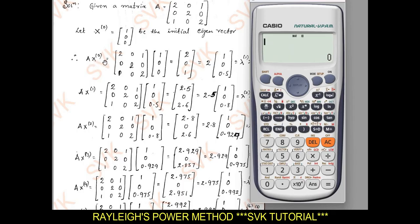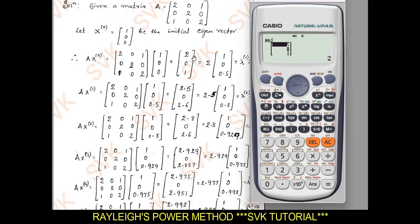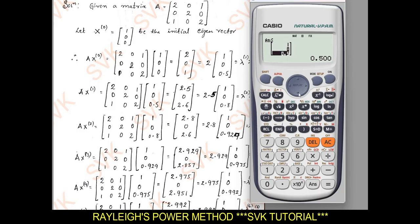Now I need to perform the matrix multiplication Ax₀. For that: Shift 4, Mat A (which is 3) multiplied by Shift 4, Mat B. Press equal to. We get the answer [2, 0, 1]. Out of these elements, 2 is the largest. Before dividing, go with Fix for 3 decimal places: Shift Mode, fix 3 decimal places. Now divide this matrix by 2. We get the new matrix [1, 0, 0.500]. As we fixed for 3 decimal places, it is displaying 3 decimals.